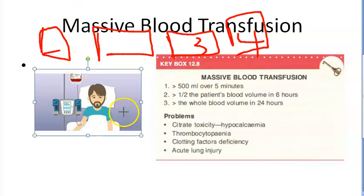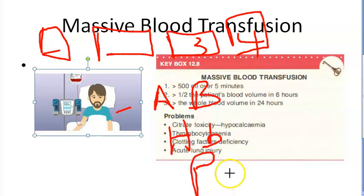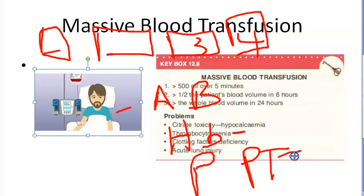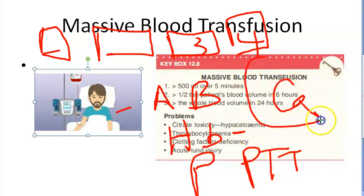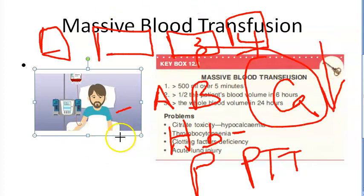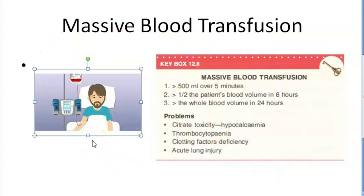When giving massive blood, you will have to monitor acid-base status, hemoglobin, and platelets - because thrombocytopenia could be a problem. Check prothrombin time and activated partial thromboplastin time because clotting factors can become deficient. Check fibrinogen and serum calcium - because of the citrate in the blood as a preservative, the patient can go into hypocalcemia.